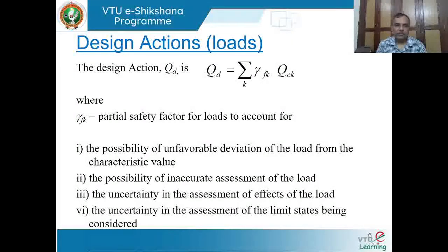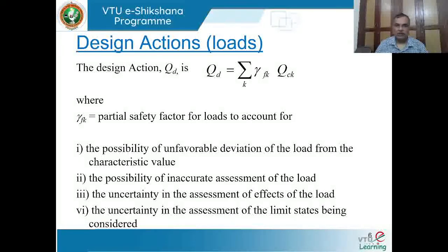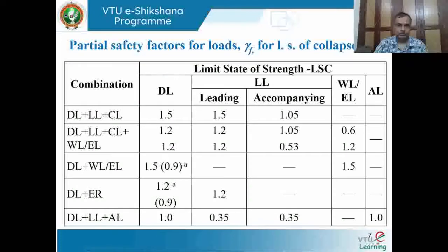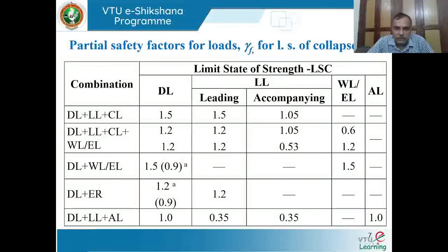For the partial safety factor for strength, it is also a factor more than 1, but the actual strength of the material must be divided by the partial safety factor so that we underestimate the strength. A small piece of information from IS 875 presents the partial safety factor for loads (γf) for the limit state of collapse. We have two limit states: limit state of collapse (estimating limiting strength) and limit state of serviceability.